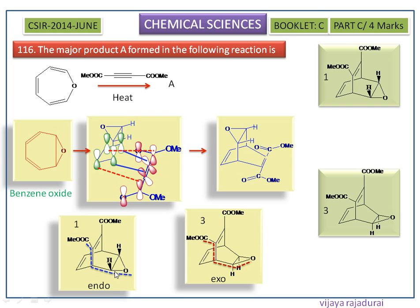Here we need some more clarification. In the product, the tricyclic ring is oriented towards the six-membered ring in the first option, whereas in the third option the tricyclic ring is oriented away from the six-membered ring. Since the tricyclic ring is oriented towards the six-membered ring, this product corresponds to the first option. So the first option is the correct answer.